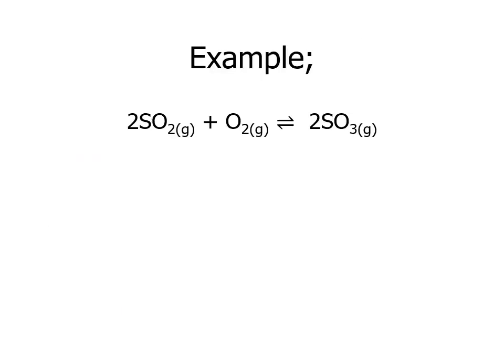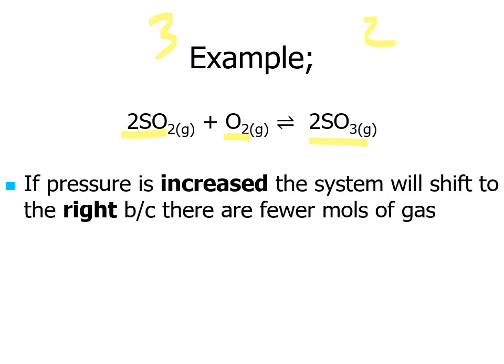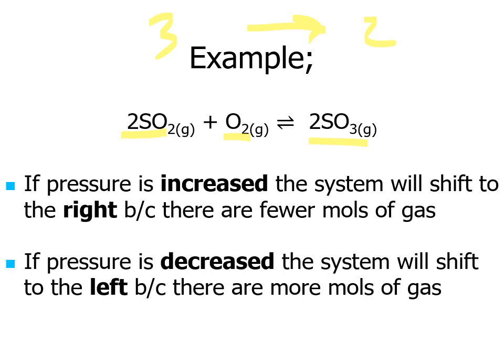For example, in the reaction 2SO₂ + O₂ ⇌ 2SO₃: on the reactant side there are three particles (two SO₂ and one O₂), and on the product side only two particles (two SO₃). If you increase the pressure, you're decreasing the volume, and the system shifts to the side with fewer particles — in this reaction, the right-hand side. If you decrease the pressure, it'll shift left toward the reactant side, which has more particles.